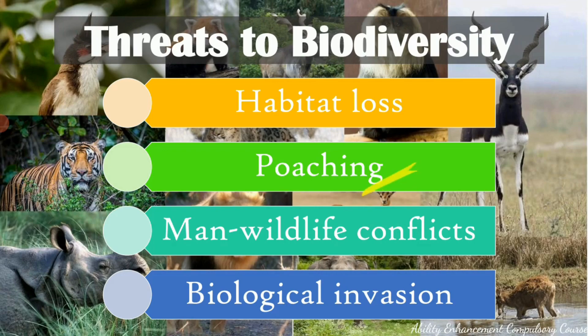The second reason for biodiversity being under threat is poaching — the hunting and harvesting of wild plants and animals, and illegal trade in their products like horns, tusks, fur, or their meat. In some cases, exotic plants are cut down for making herbal products. All of these reasons — the illegal hunting and cutting down of plants and animals — are also acting as a threat to biodiversity.